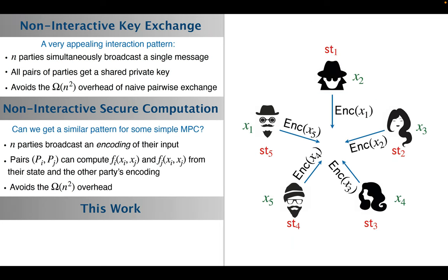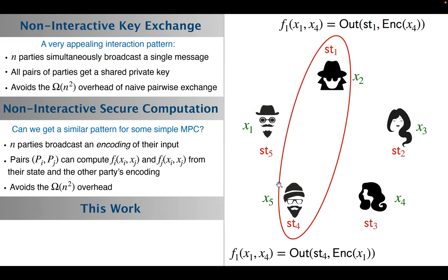Something which would be quite desirable would be to achieve a similar interaction pattern for some secure computation functionalities. Key exchange is one goal, but secure computation offers us many other interesting goals. In secure computation, we want n parties to broadcast an encoding of their input, and then each pair of parties should be able to retrieve its output without any further interaction, just by computing some output function on its local state and the encoding of the other party. This will have the very appealing effect of avoiding the quadratic overhead of doing pairwise secure computation.